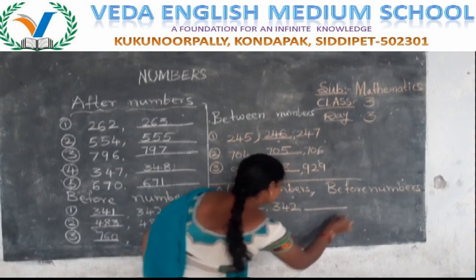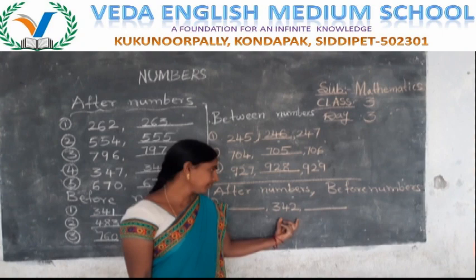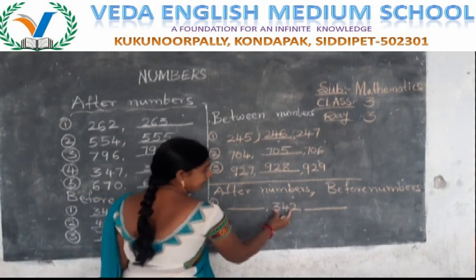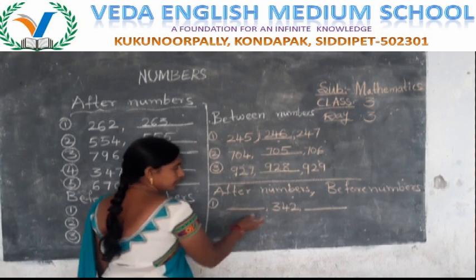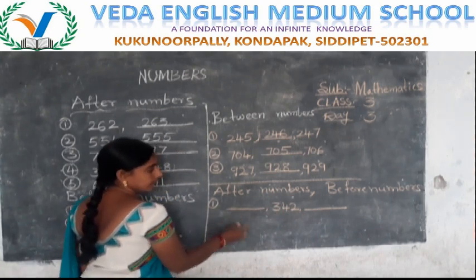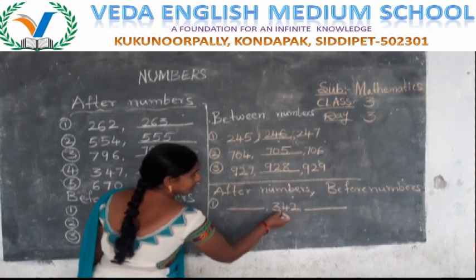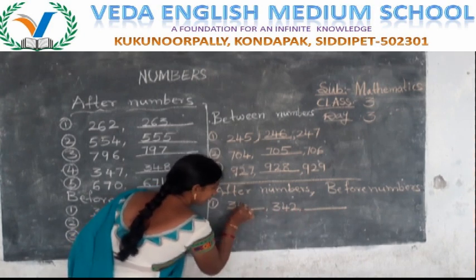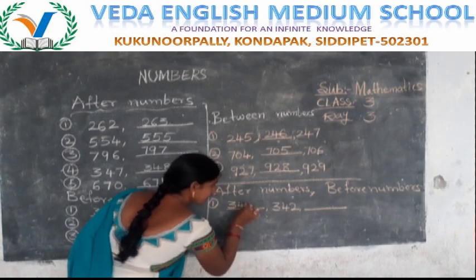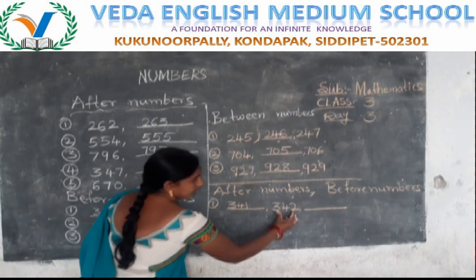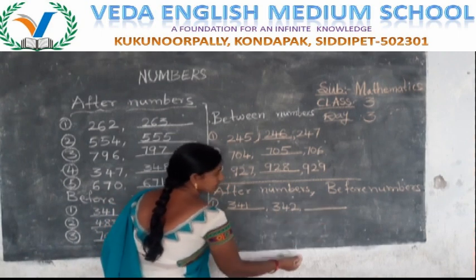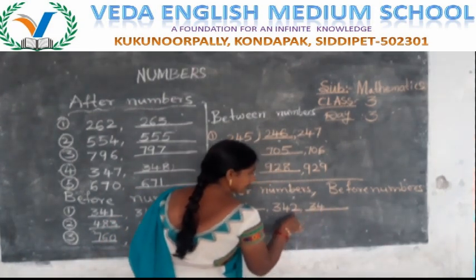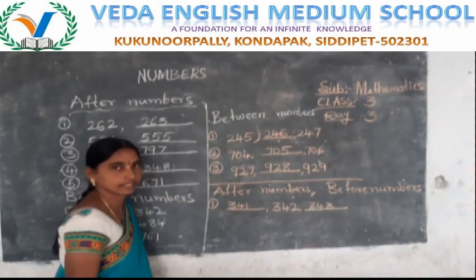Practice: 342. Write the before number and after number. In the hundreds place and tens place — no change. Only the ones place changes. Before 342: before 2 is 1, so 341. After 342: after 2 is 3, so 343. Okay, understood?